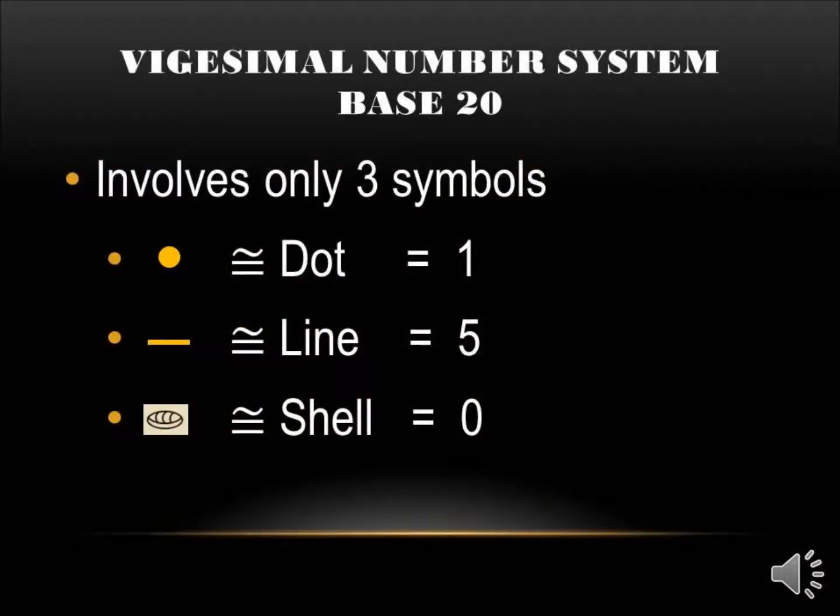Their system is a vigesimal positioning system in which numbers in higher places grow multiplied by 20s instead of powers of 10. We will describe this system a little further soon. It involves three symbols. You have a dot that equals 1, a line that equals 5, and a shell that represents 0.